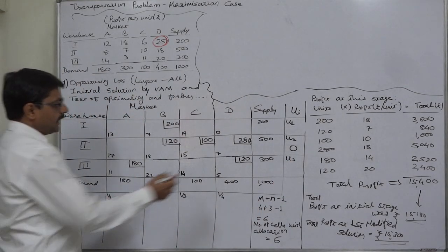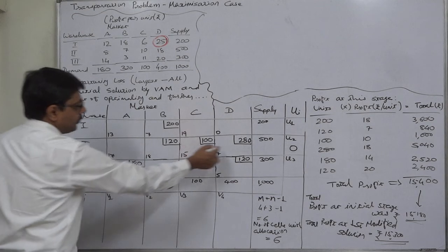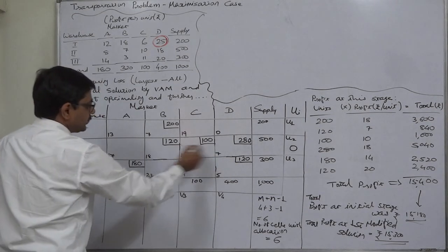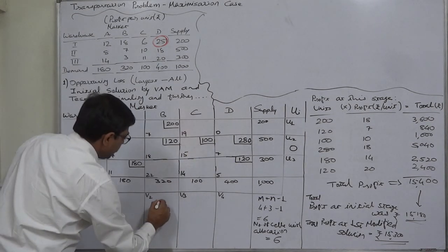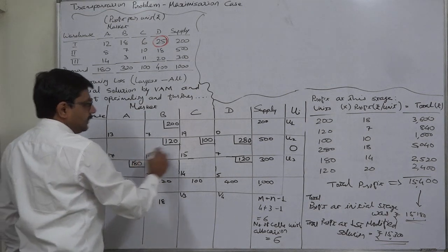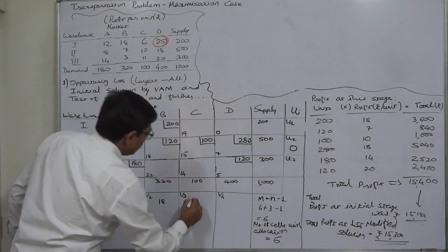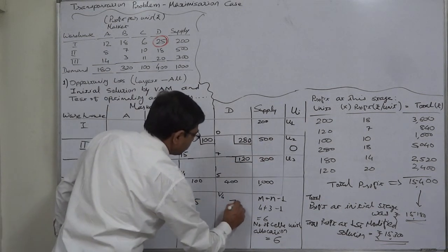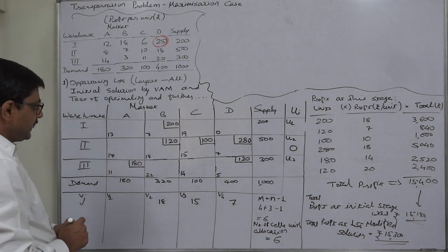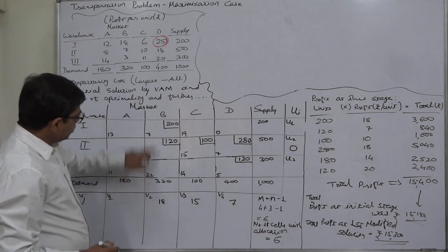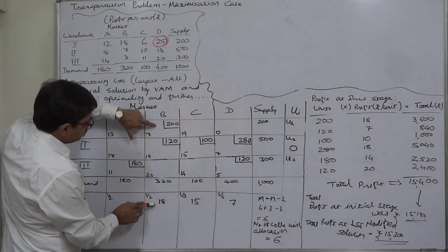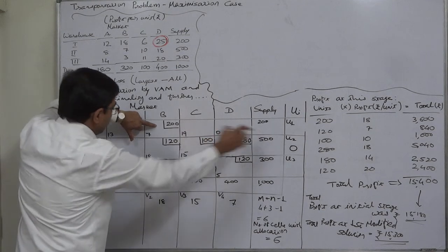And according to this, now we know that the relevant v for these three occupied cells will be equivalent to c. C minus u equals to 18, 15, and 7. Now on the basis of this occupied cell and this v, c minus v, we can write that u1 is 7 minus 18, which is minus 11.